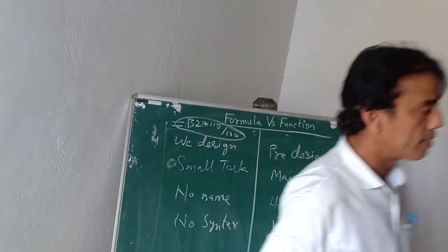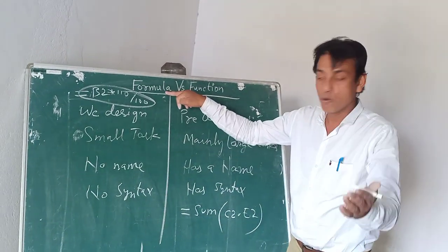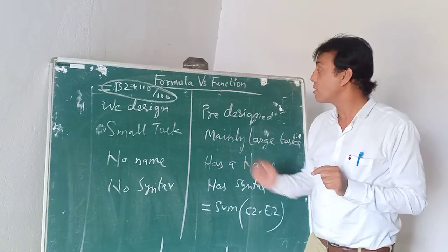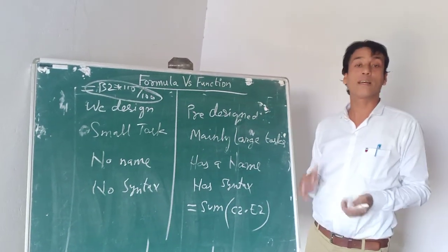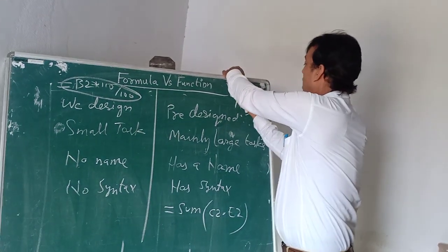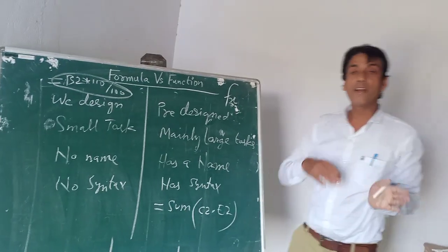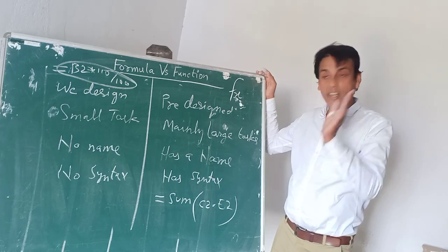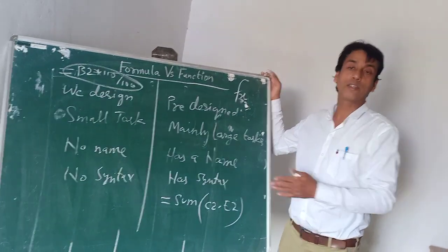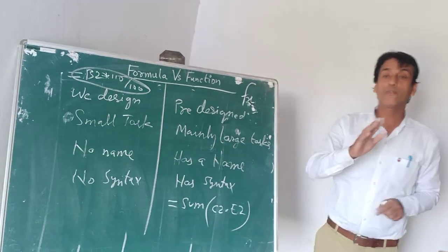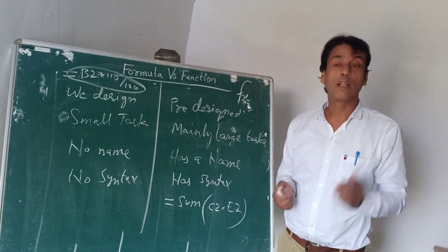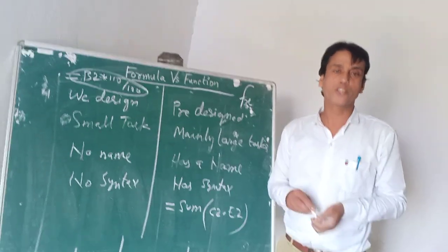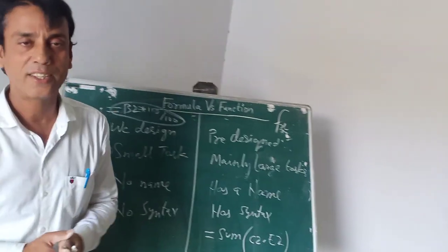So the conclusion is: formula is designed by the user for small tasks. It has no name; it is not defined by a name. Whereas functions are provided by Excel. Excel has a library of functions. If you press this button FX from the toolbar, it will take you to the function library. It has hundreds of functions available for various purposes. You need to know the purpose of the function, the name of the function, and the syntax of the function. Only then you can use it. As a matter of fact, the function makes Excel a very powerful analysis tool for business executives and managers. Thanks for joining this session. I hope you are doing very well. Thanks for joining this session, bye-bye.